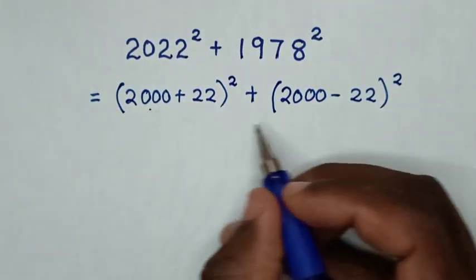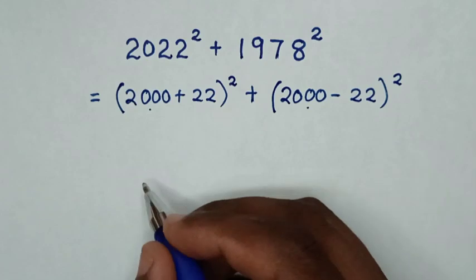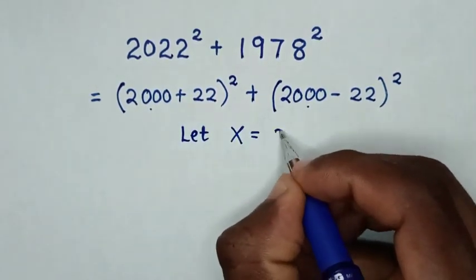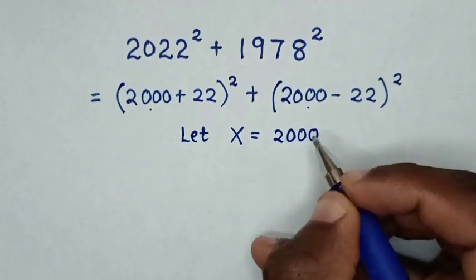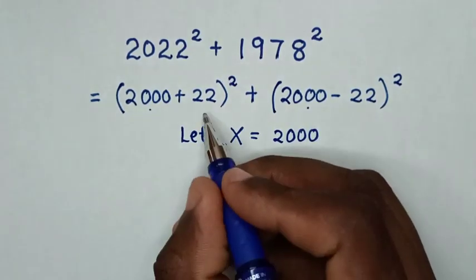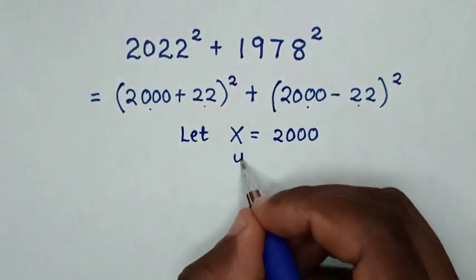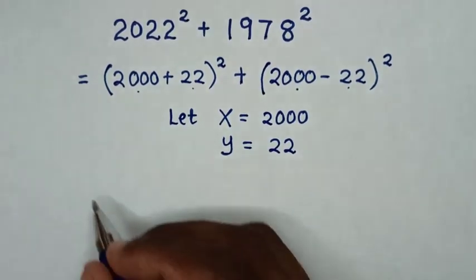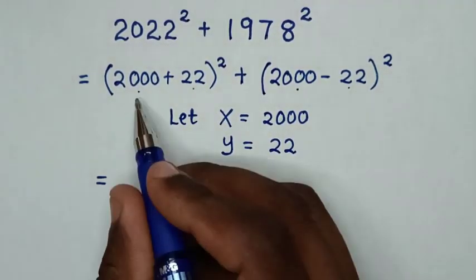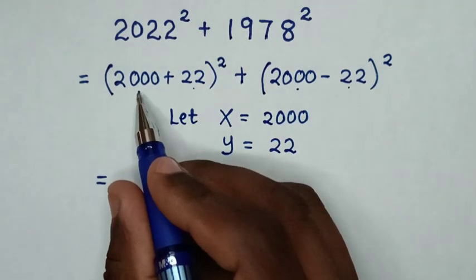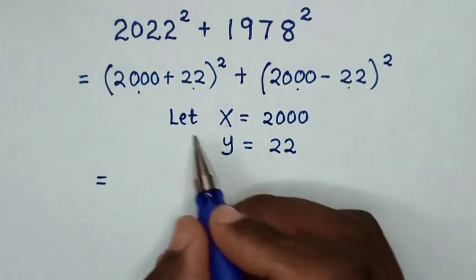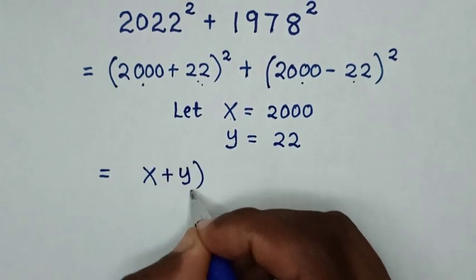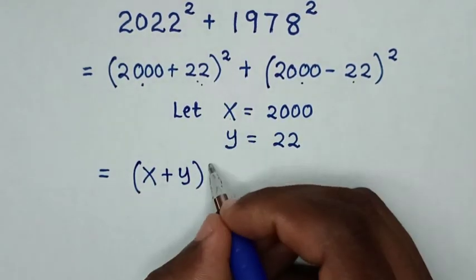Then, in the next step, 2000 is common so we let x equal to 2000, and 22 is also common so we let y equal to 22. Then it will be equal to (x + y) to the power of 2.